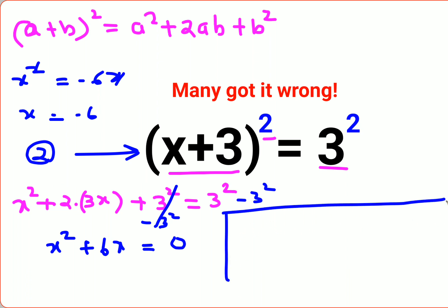First thing what you need to do is you need to take x common and I am left with what x(x + 6) = 0.